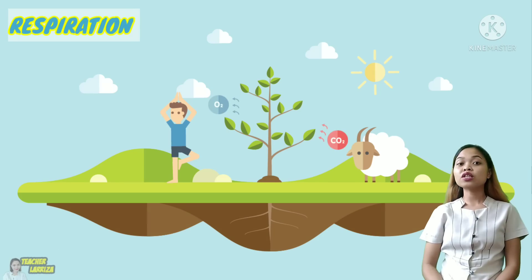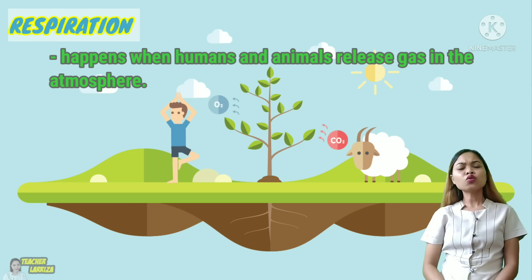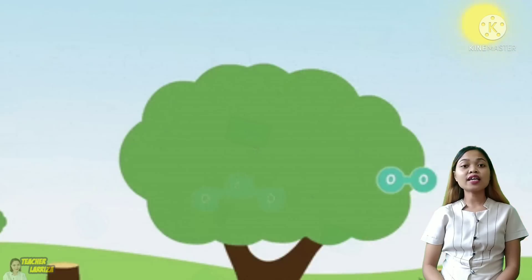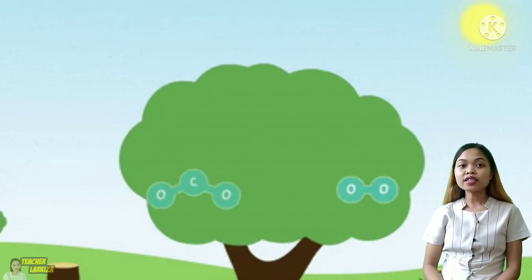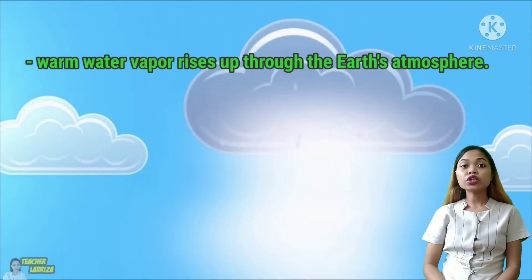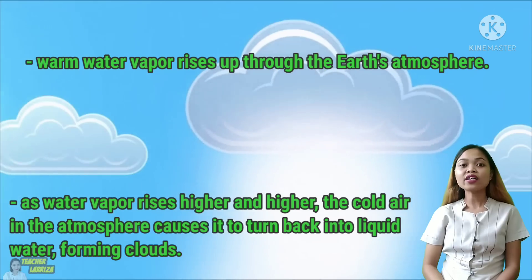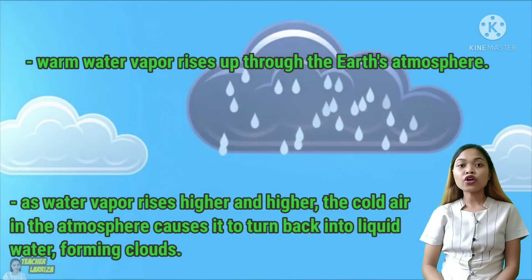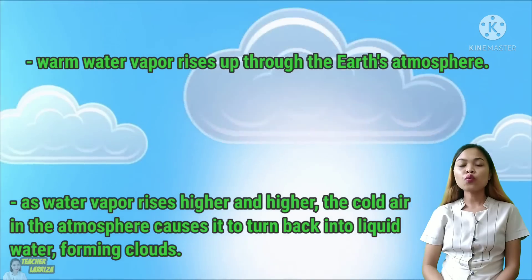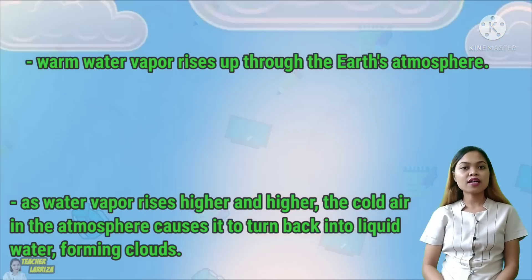Animals and humans release water into the atmosphere in the form of water vapor through the process called respiration. Water is able to travel in our atmosphere as water vapor. Warm water vapor rises up through the Earth's atmosphere. As the water vapor rises higher and higher, the cold air of the atmosphere causes the water vapor to turn back into its liquid state, forming clouds.